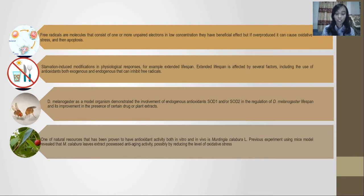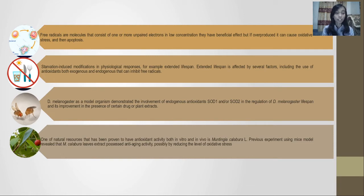Normally, the human body produces endogenous antioxidants. One of them is superoxide dismutase. This is the first class and one of the most important enzymatic antioxidants to inhibit reactive oxygen species, especially superoxide anion radicals.